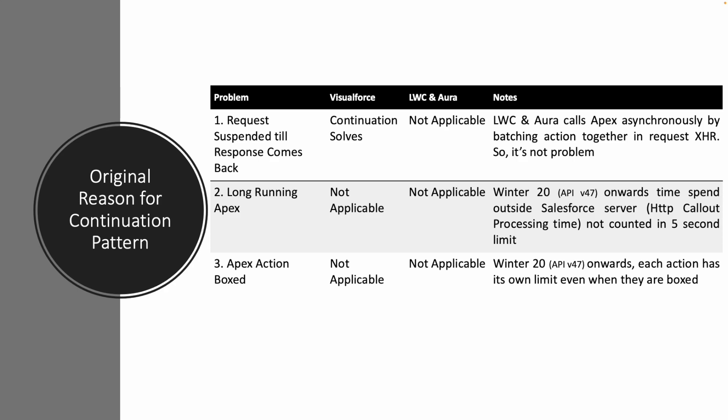Coming to the second point: at that time there was a limit that you cannot have more than 10 transactions running for more than five seconds, otherwise you would get a long-running Apex error. However, from Winter 20 onwards — which is API 47 — that's not applicable anymore. I'm going to show you the Salesforce documentation after this slide.